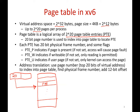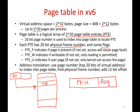Inside the page table entry, you will find a physical frame number and some flags. In essence, a page table entry is simply a pointer to the actual physical frame that has the contents of that page. To translate an address: you are given a virtual address which is a 20-bit page number along with a 12-bit offset. You index into the page table, locate the page table entry, find the physical frame number, and then add the 12-bit offset to get the physical address corresponding to that virtual address.